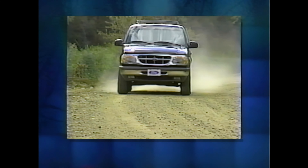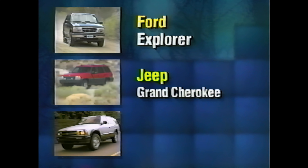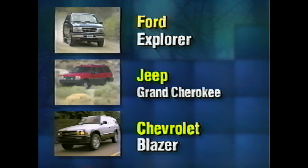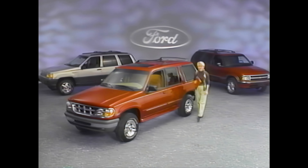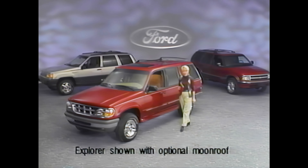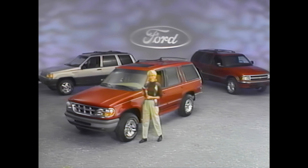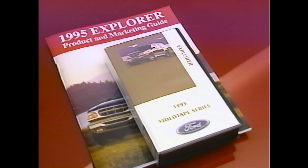This is a feature-to-feature product comparison between the four-door, four-wheel drive models of the 1995 Ford Explorer, the carryover Jeep Grand Cherokee, and the new Chevy Blazer. We'll organize our comparison into four areas: ride and handling, comfort and convenience, safety and security, and value. We'll tell you the facts and show you how to demonstrate key Explorer advantages. Before viewing this program, take time to refresh your knowledge of Explorer features and benefits by reviewing the 1995 Explorer product video and the 1995 Explorer product and marketing guide.